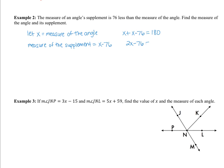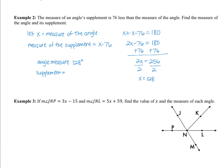We can just solve this equation. So 2x minus 76 equals 180. Add 76 to both sides and we get 2x equals 256. Divide by 2 and that is 128. So x equals 128, which is the measure of the angle. The supplement measure is x minus 76, so 128 minus 76 is 52. The supplement measure is 52 degrees.